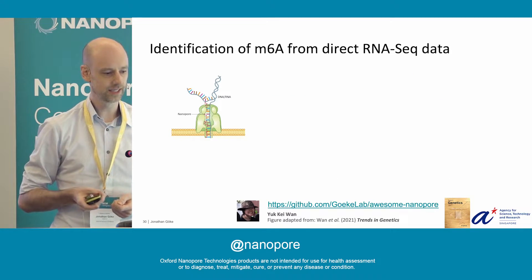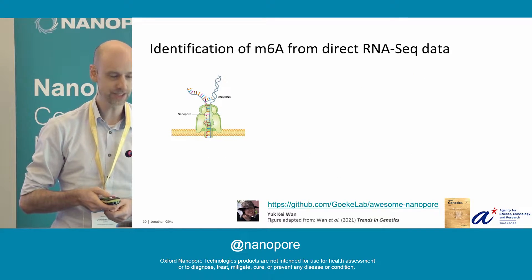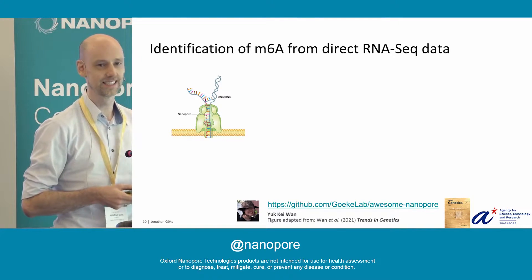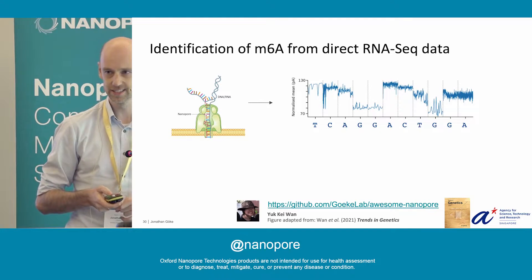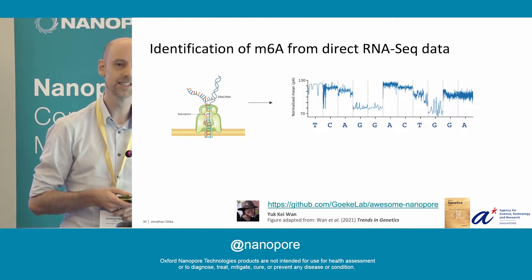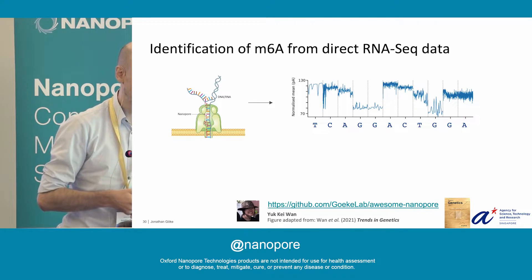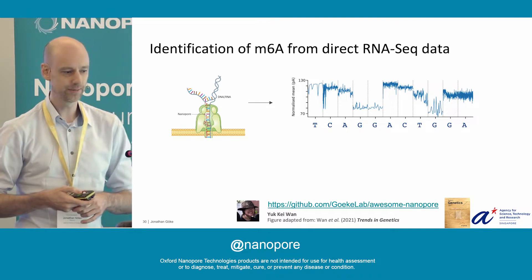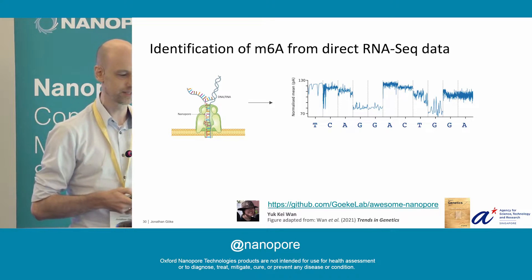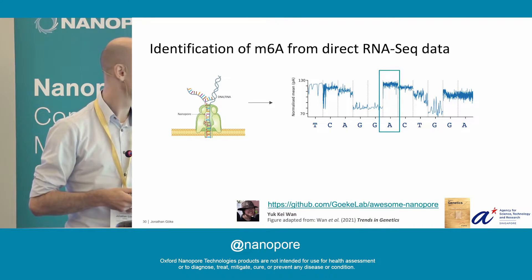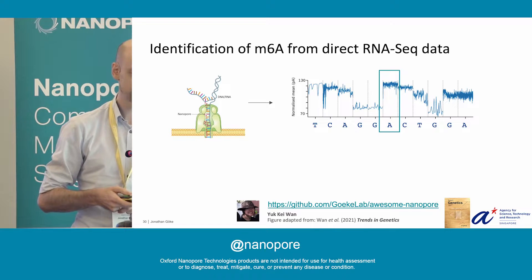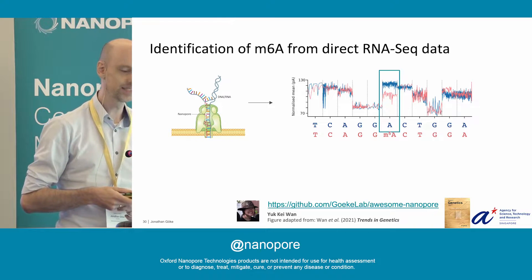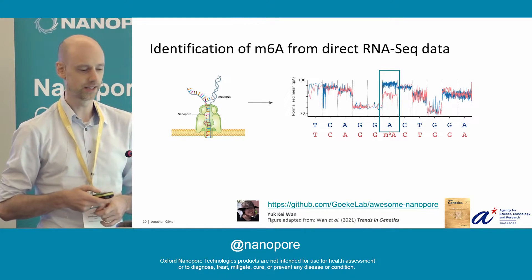So the technology we're using is nanopore sequencing, which does not need much of an introduction. The principle is very familiar: the nucleic acid is directly put to the pore, an electric current signal is measured, and from that signal we can identify the sequence. The advantage here is that we can sequence RNA directly, meaning we can sequence RNA with modifications being present. That results in a change — if you look at position A, if there is a modified A such as M6A, there would be a shift in the signal. This is what we can use to identify modifications with direct RNA sequencing data.